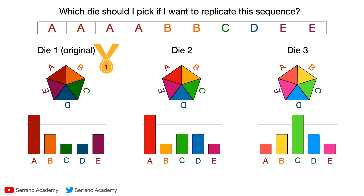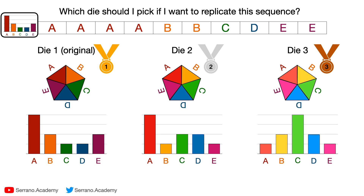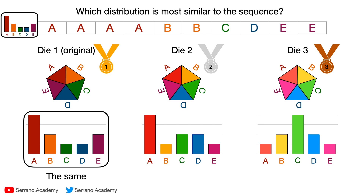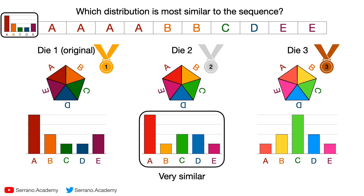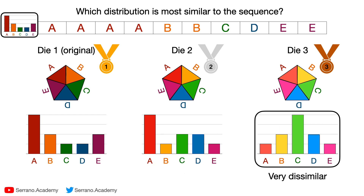Well, if you said the first one you are right. And the second one you would pick is die two. It seems like the third die is the worst one. Your intuition may have told you that if the distribution for the results we want to get is 0.4, 0.2, 0.1, 0.1, 0.2, then which of the bottom ones is most similar to that? The first one is exactly the same, so it gives us the best probability. The second one is pretty similar. And the third one is very dissimilar — it's going to land on C a lot more, so it's very unlikely to give us the original sequence.